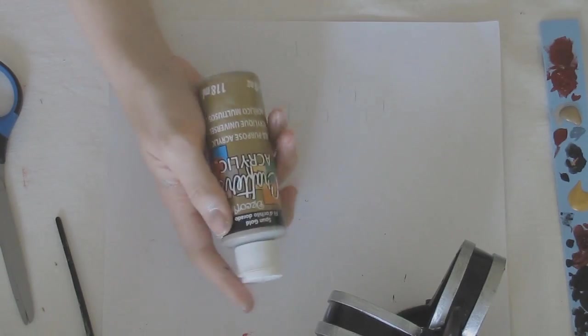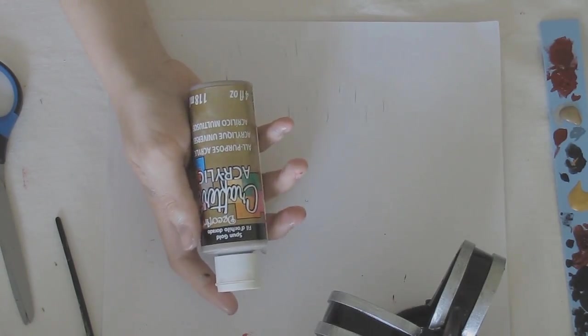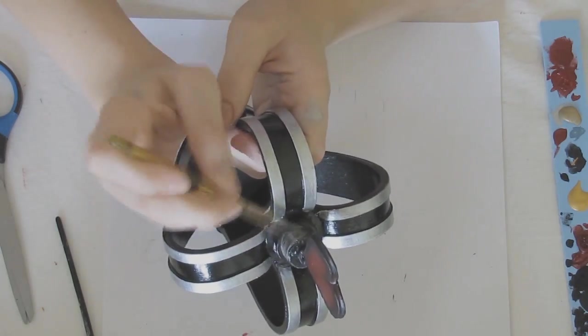I wanted to have a little gold on the crown to reference the original Queen of Hearts so I just painted the upper ring on the top of the crown gold.